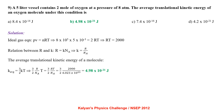A 5 litre vessel contains 2 moles of oxygen at a pressure of 8 atm. Writing ideal gas equation PV = nRT: 8×10⁵ × 5×10⁻³ = 2RT, giving RT = 2000. Using K = R/Nₐ, the average translational kinetic energy of the molecule is (3/2)KT = (3/2)(R/Nₐ)T, which simplifies to 4.98×10⁻²¹ Joule.